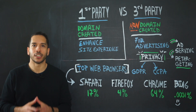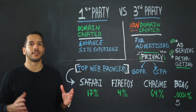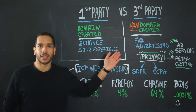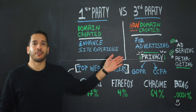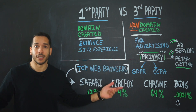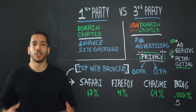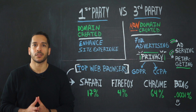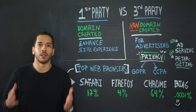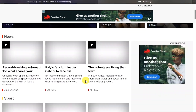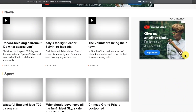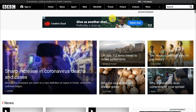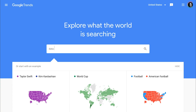However, third-party cookies are different. They are not placed by the domain or the website — they're actually placed by advertisers with the goal to retarget you with personalized messaging based on your behavior online. This is generally known as those creepy ads that follow you around the internet and annoy you.